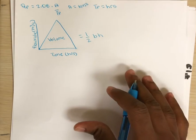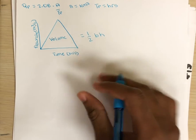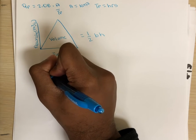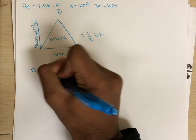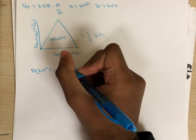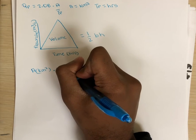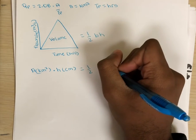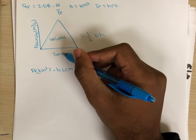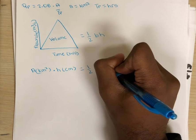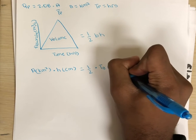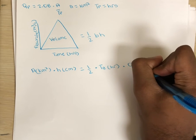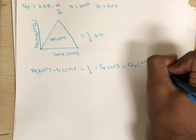We can use this expression to formulate an equation that the area of the catchment times the depth, which we'll denote as h, is equal to one-half base, which is the time, which we'll denote as tb, multiplied by flow rate, the peak flow rate, which is meters cubed per second.